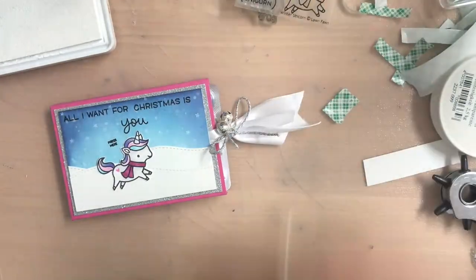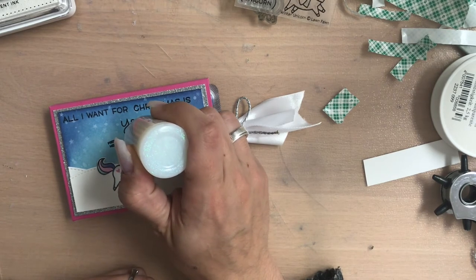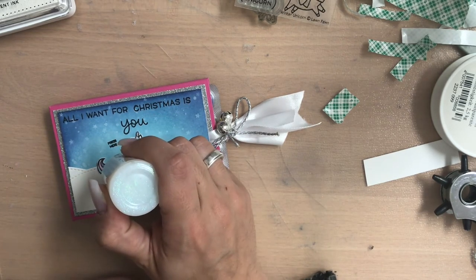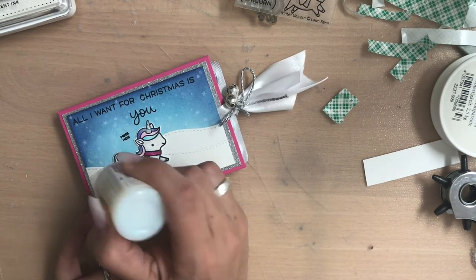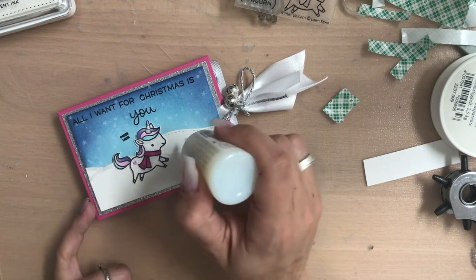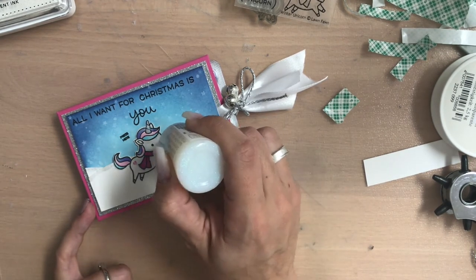Now I'm using here a little stamp that says push here from Heavy Doodles and I'm stamping it over the switch. I use from the Lawn Fawn set some stars to stamp in the background. I used here some white pigment ink from Simon Says Stamp.